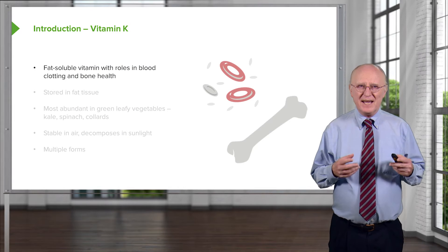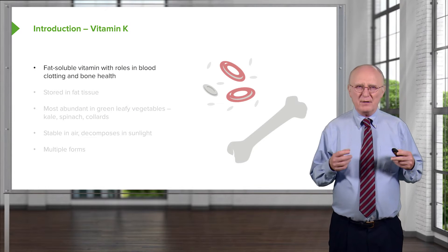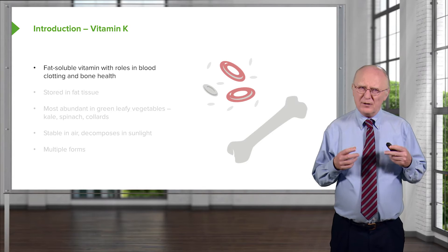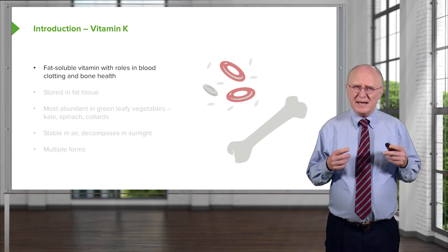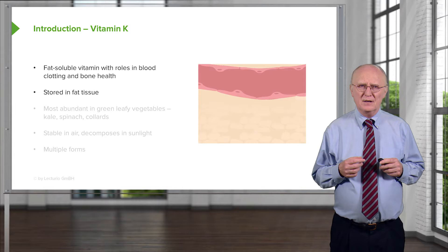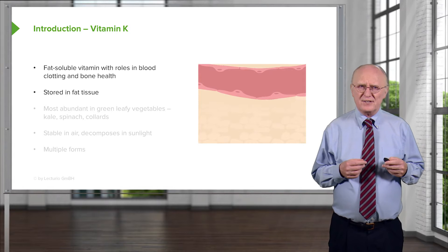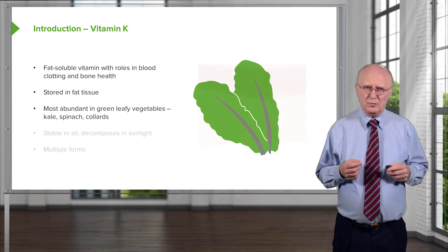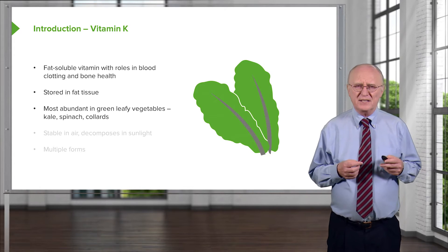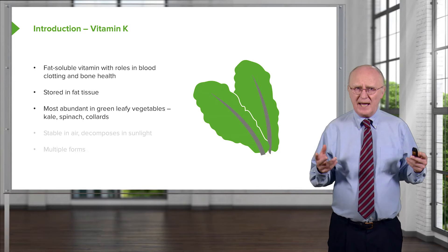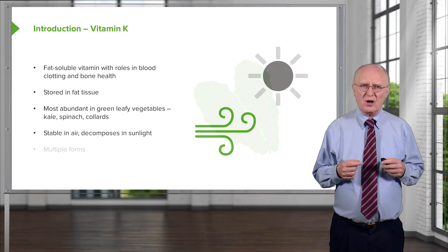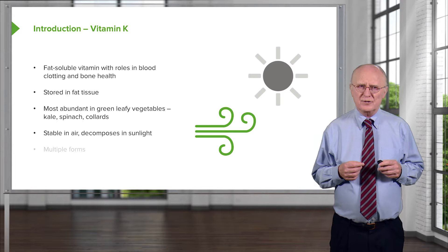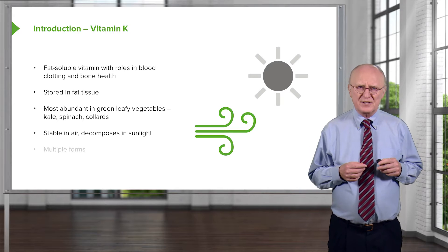Vitamin K is a fat-soluble vitamin that plays very important roles in the blood clotting process, and also an important role in maintaining bone health. Like the other fat-soluble vitamins, vitamin K is stored in fat tissue. It is found very abundantly in green leafy vegetables like kale, spinach, and collards. It's a compound that's stable in the air, but it does decompose when exposed to sunlight.